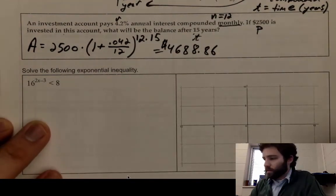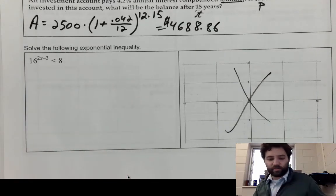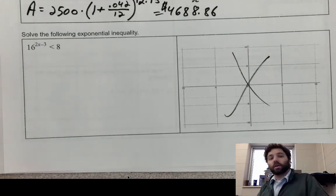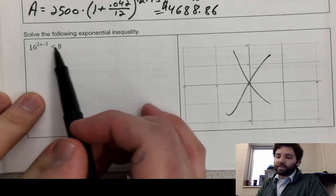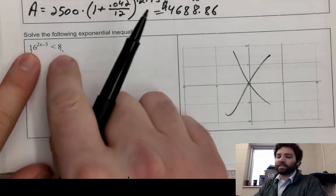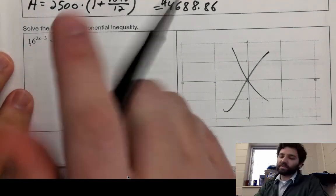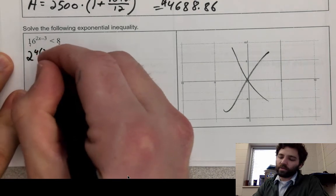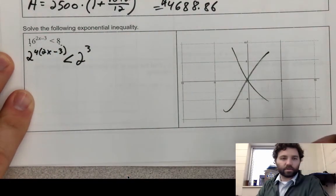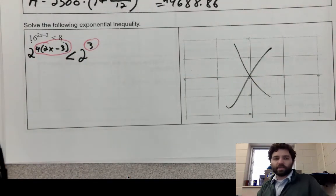Now we solve an exponential inequality. The approach is very similar to solving exponential equations — the main tool is getting each side to have the same base. Looking at 16 and 8, we can use base 2: 16 is 2 to the 4th, so the left side is 2 to the 4th raised to (2x minus 3), which is less than 8, which is 2 to the 3rd. Then we set the exponents: 4 times (2x minus 3) less than 3.